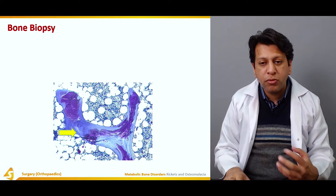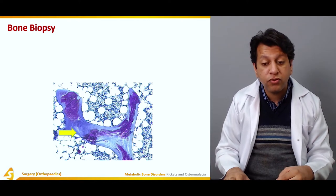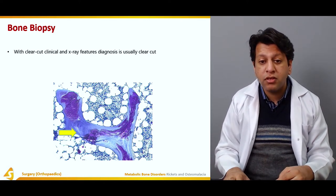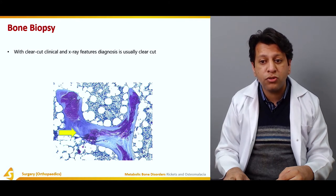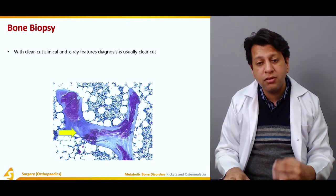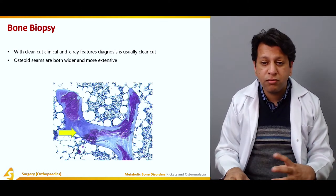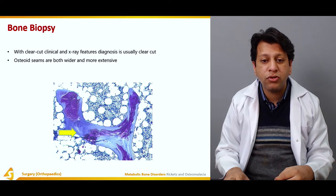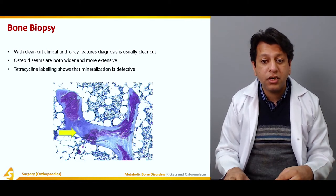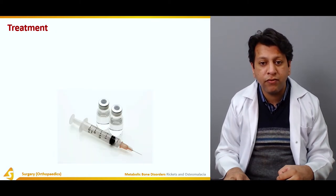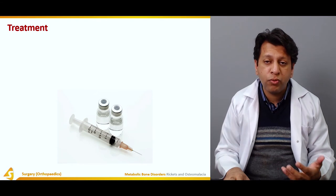Bone biopsy is sometimes needed. On histopathology, osteoid seams appear wider and more extensive. Tetracycline labeling shows that mineralization of the bone is defective.